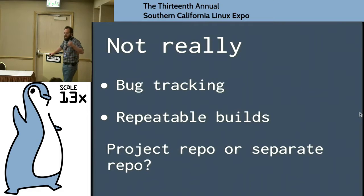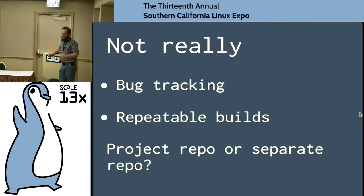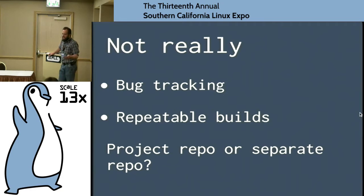Bug tracking: every time you do the demo, people are going to come in with suggestions and questions — why does this work, who would actually want this thing. Or you find yourself doing an extra step manually in the demo that breaks the flow. So you need a lightweight system to capture what's wrong with the demo and what you want to do about it next time. Use a simple bug tracker.